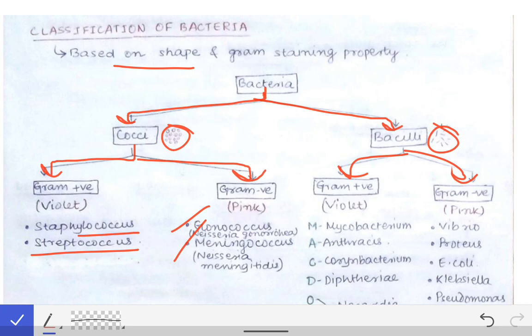Gonococcus is otherwise known as Neisseria gonorrhoeae, and Meningococcus is otherwise known as Neisseria meningitidis.